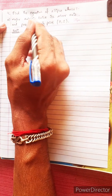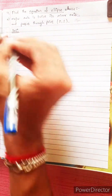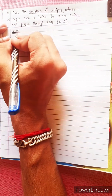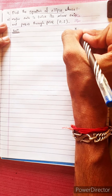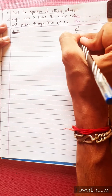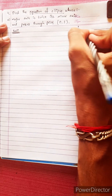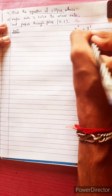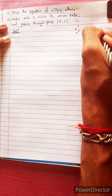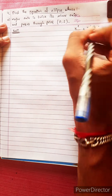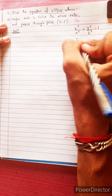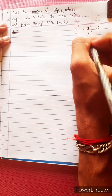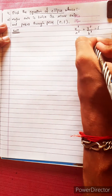Find the equation of the ellipse. We will find the equation of the ellipse x squared by a squared plus y squared by b squared equals 1. This is the equation we will work with.